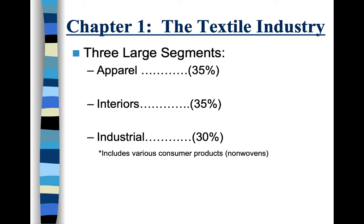Chapter One is called 'The Textile Industry.' You should have your textbook — the Fabric Science text — which comes with or you can buy separately the Fabric Science Swatch Kit. We'll go over that in the first Zoom on Monday, January 11th. Those books are very important because I'm going through the chapters page by page, summarizing them for you. You should be reading these chapters as we go through each week.